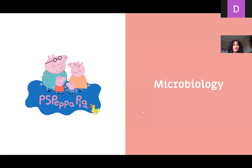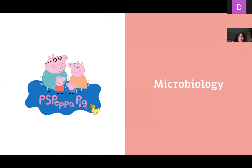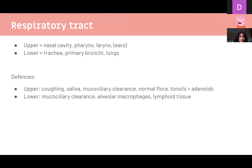I'll be taking you through upper respiratory tract infections. The respiratory tract is split into upper and lower, each with its own immune defenses. In the upper, you have coughing, saliva, mucociliary clearance, normal flora, and tonsils and adenoids, which are lymphoid tissue.